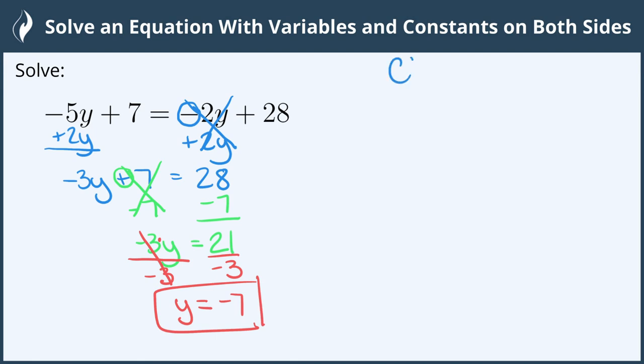We should go ahead and check our solution by substituting it back into the original equation to see if we did all of our calculations correct. We can always know if we got the correct answer in these equations. So we have the original equation of negative 5y plus 7 equals negative 2y plus 28.